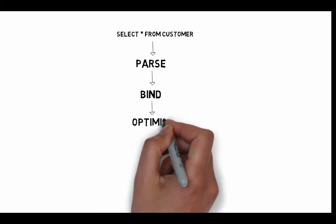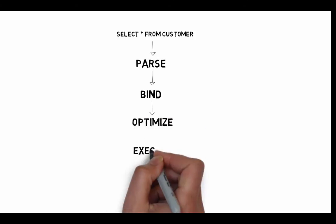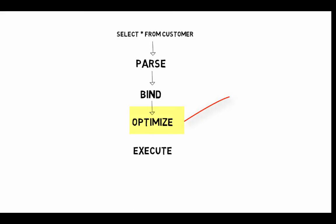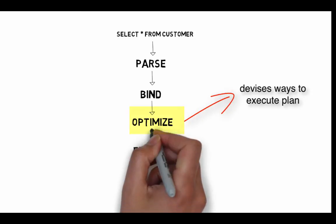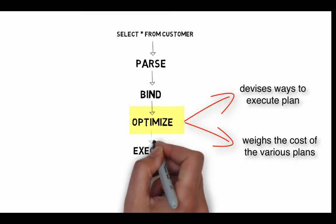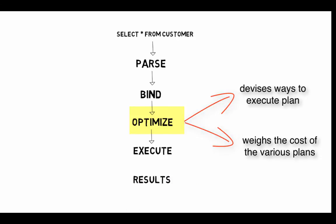The next step is query optimization. The logical tree is then used to run the query optimization process, which roughly consists of the following two steps: generation of possible execution plans and cost assessment of each plan.